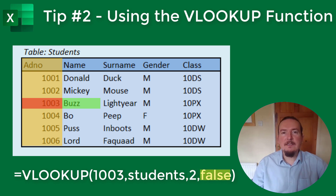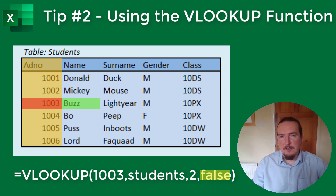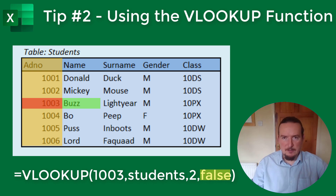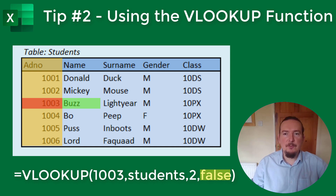The fourth and last input value needs to be either TRUE or FALSE. This TRUE/FALSE flag indicates whether you want an exact match, which is FALSE, or the closest match, which is TRUE. Mostly for student data we want an exact match, so usually we are going to be using FALSE.